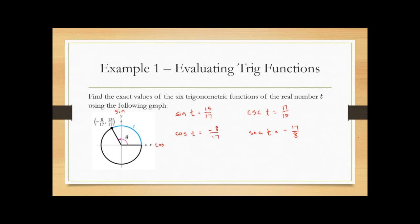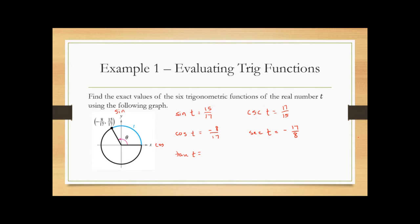Then tangent is sine over cosine, which is (15/17) divided by (-8/17). Writing it this way helps me remember that tangent is sine over cosine. So we have 15/17 divided by -8/17, which means multiplying by the reciprocal: 15/17 times -17/8. The 17s cancel and we're left with -15/8.